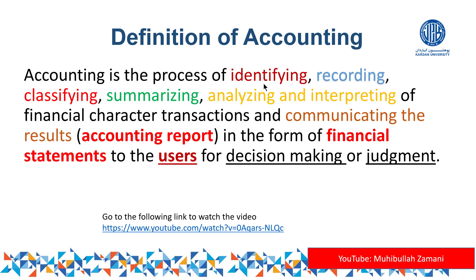After identifying, we record the transaction through a journal entry. Then we classify it in the ledger, followed by summarizing in a trial balance. After that, we analyze and interpret the financial statements, and finally we communicate the accounting report in the form of financial statements to the users of accounting information for decision-making purposes.